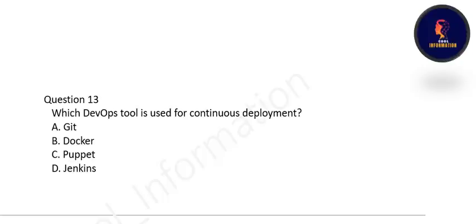Next question: which DevOps tool is used for continuous deployment? Jenkins is used for that. Jenkins is a DevOps tool used for continuous deployment. Option D is correct.